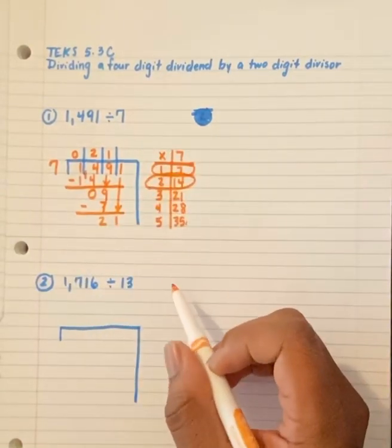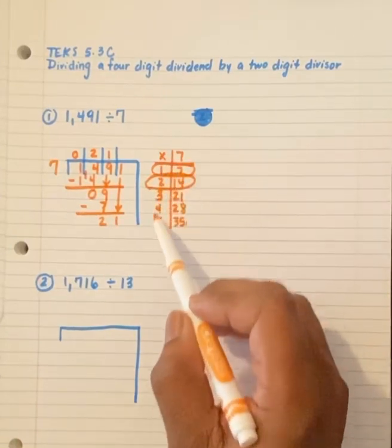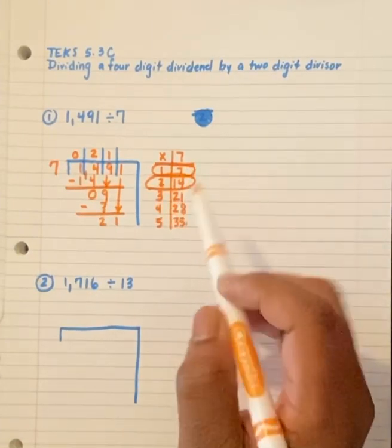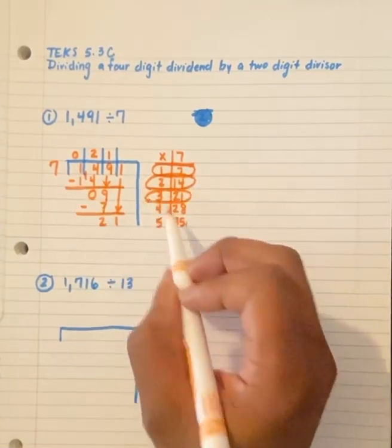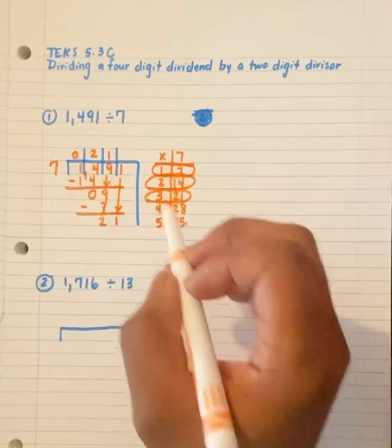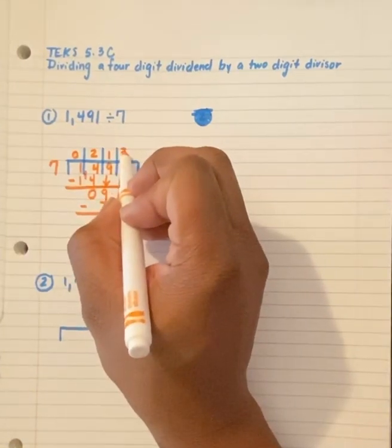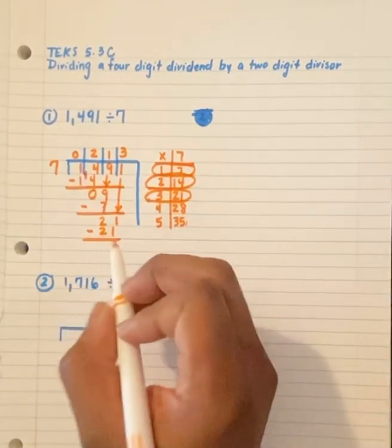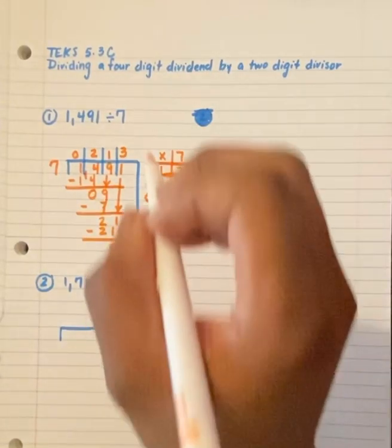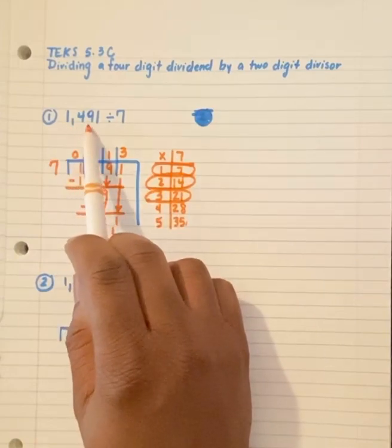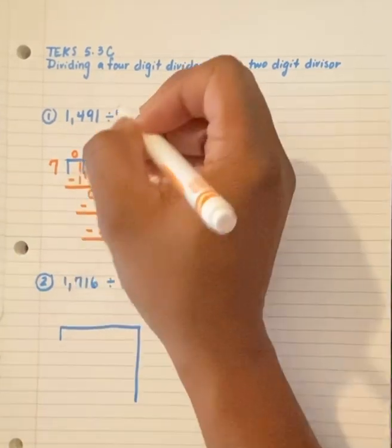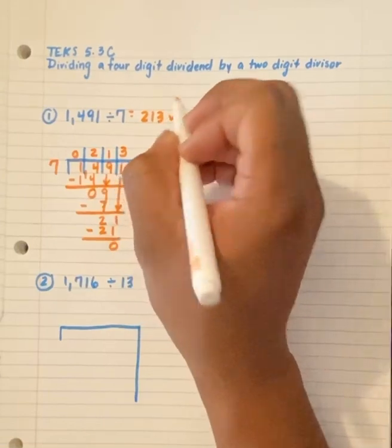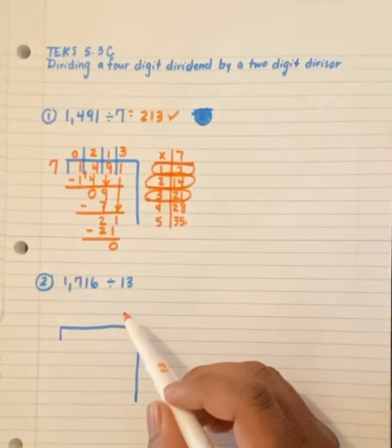Can I multiply 7 times something to get 21? Is 21 an option here? It's right there. I circle this. Where does my 3 go? Exactly. The 3 goes up here. And the 21 goes below 21. And I again subtract. That means 1,491 divided by 7 equals 213. And this is my answer. So, let's try number 2.